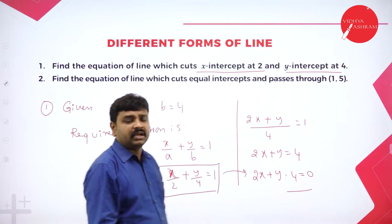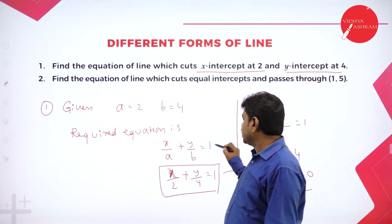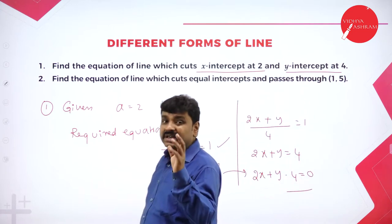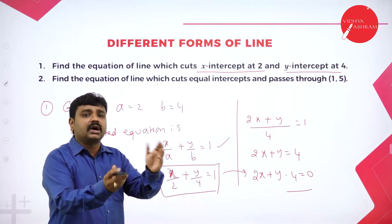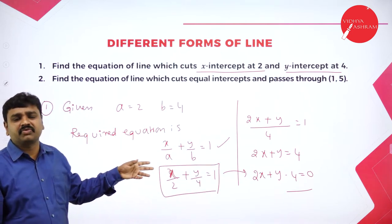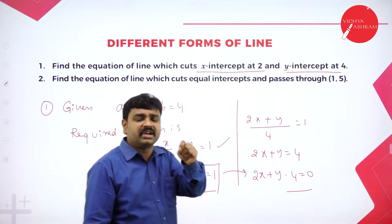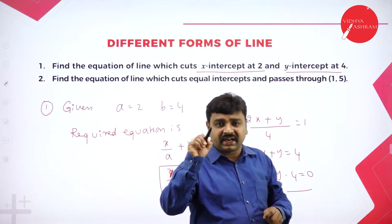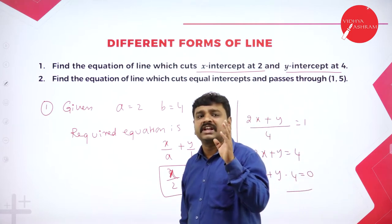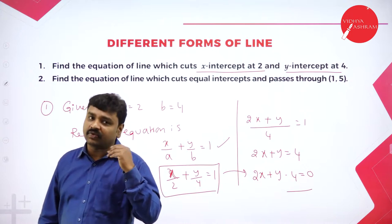What is the intercept form of line? x by a plus y by b equal to 1. When to choose this form? When you are given intercepts or when there is a hint about intercepts, use intercept form. What is meant by intercept? It is a point where the line cuts the axis — x-intercept means a point where the line cuts the x-axis, and y-intercept means a point where the line cuts the y-axis.